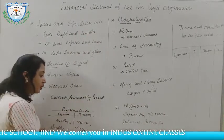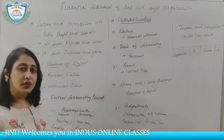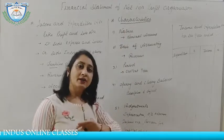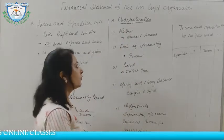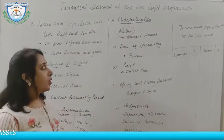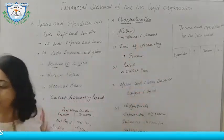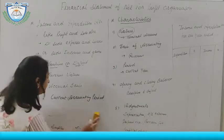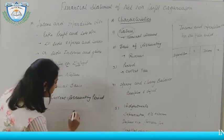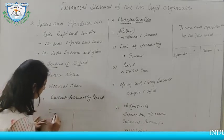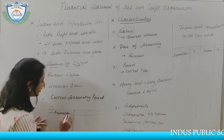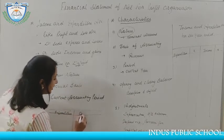Now there are some characteristics of the Income and Expenditure Account. The first one is nature — the Income and Expenditure Account is nominal in nature, just like the profit and loss account. On the debit side we take expenditure, and on the credit side we take income.